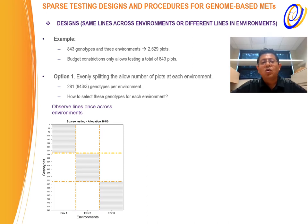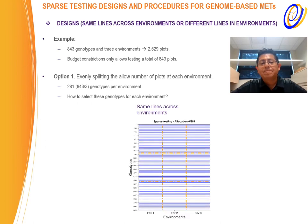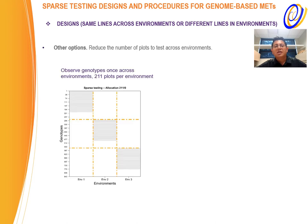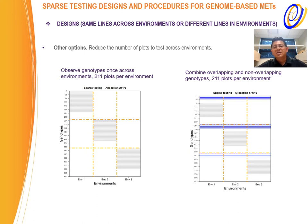The first option is to observe lines only once across environments. Another option is to observe the same set of 281 lines across all environments. A third option combines lines tested only once in one environment with another set of lines, shown in blue, observed across environments — combinations of both types of approaches. We also considered a reduced number of plots tested across environments. Instead of testing 281, we test 211 plots per environment, where genotypes were observed only once across environments, keeping the same testing set as before so we can compare directly with the previous schemes.